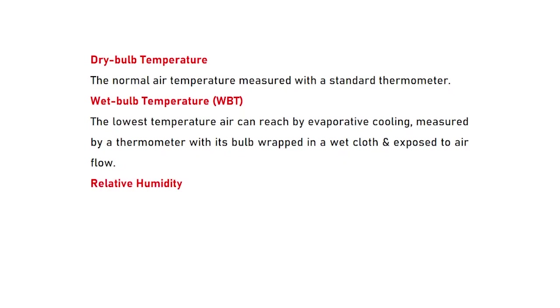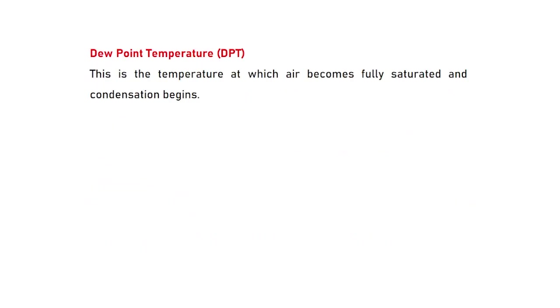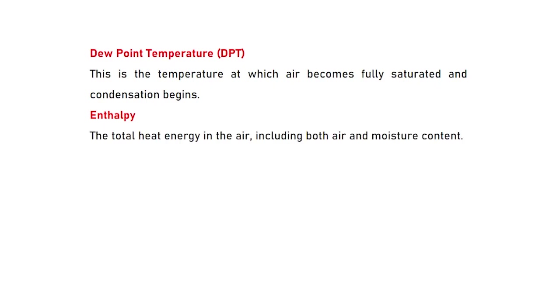The next parameter is relative humidity — the percentage of water vapor in the air compared to how much it can hold at that temperature. It is relative to the amount of water that air at the same temperature can hold at 100% saturation, so a lower RH represents drier air. The next one is dew point temperature: the temperature at which air becomes fully saturated and condensation begins.